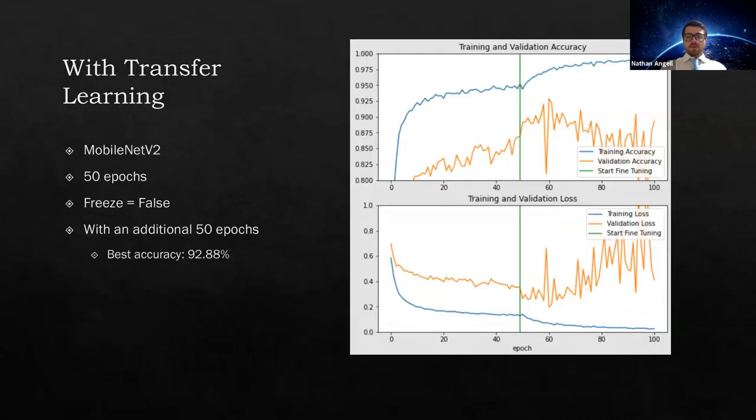So if you look at the orange line running through the MobileNet V2, the MobileNet V2 transfer learning model gave the model better accuracy. As the model passes through the green line, you can see that the model gets more accurate. This is because we set the freeze equal to false.